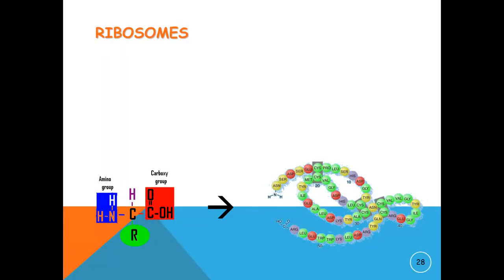Ribosomes are minute particles consisting of RNA and associated proteins that function to synthesize proteins. Proteins are needed for many cellular functions such as repairing damage or directing chemical processes. Ribosomes can be found floating within the cytoplasm or attached to the endoplasmic reticulum.